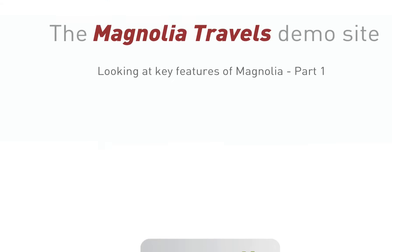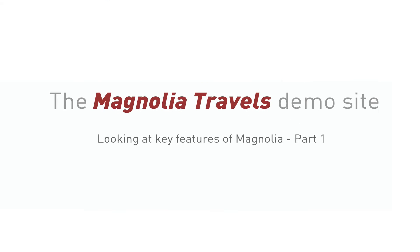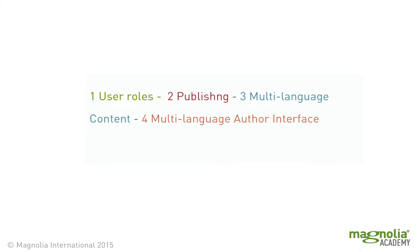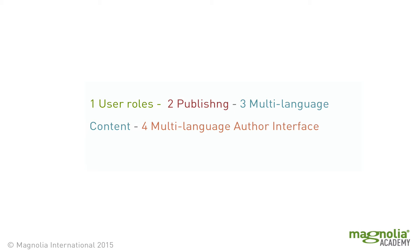In this video, we'll use the travel demo to take a look at some of the key features of Magnolia: user roles, publishing, a multi-language website, and a multi-language author interface.